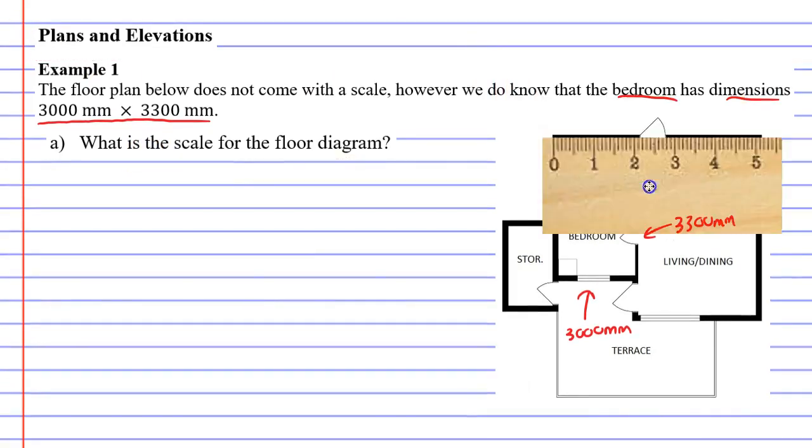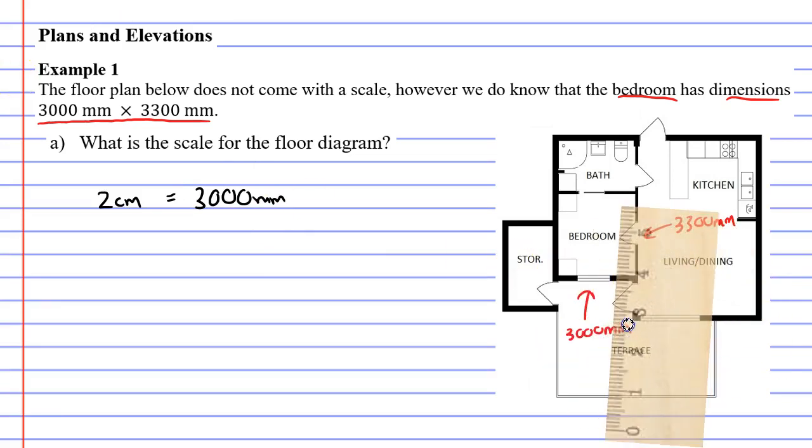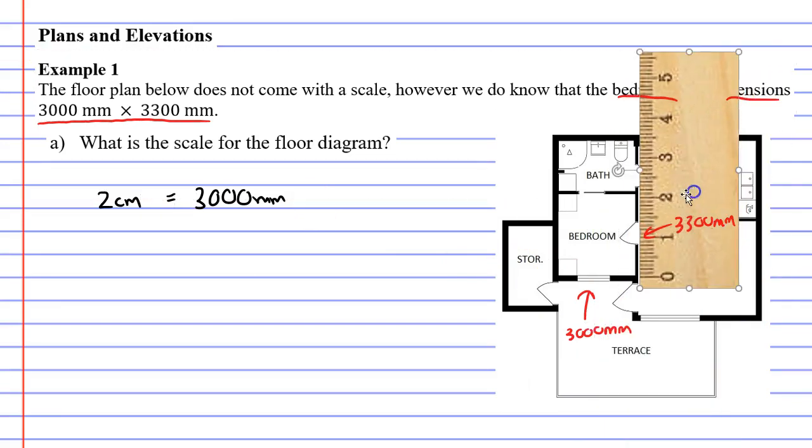What we need to do is grab our ruler and measure these sides. We've got this side which is two centimeters, so we'll write that down. Two centimeters is equivalent to 3,000 millimeters. And then we also have the other side which is 3,300 millimeters, which when you measure it comes out as 2.2 centimeters. We really only need to use one of these but we'll look at both of them anyway.